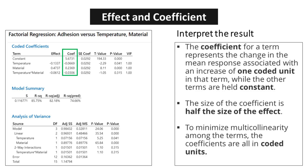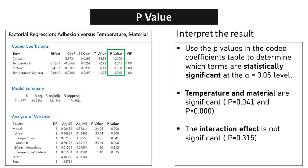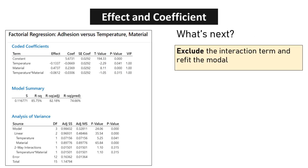One key consideration in interpreting coefficients is the presence of multilinearity among the terms. To address this, coefficients are often presented in coded units to minimize the impact of multilinearity and provide more reliable estimates. Based on the analysis of the coded coefficients table, the terms temperature and material are statistically significant at the alpha equals 0.05 level, supported by p-values of 0.041 and 0.000 respectively. The interaction effect between the variables is not statistically significant, as evidenced by a p-value of 0.315. By excluding the interaction term, the model becomes simpler and easier to interpret.